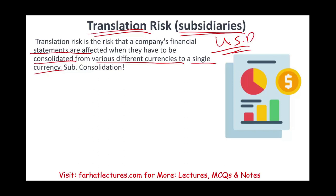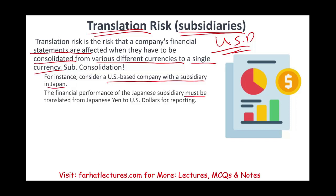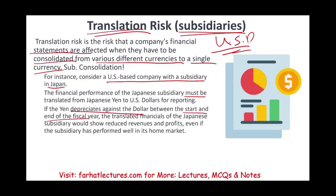For example, consider a US-based company with a subsidiary in China. The financial performance of that subsidiary must be translated from the currency into US dollars at the end of the reporting period — you cannot report sales in yen to users; you have to translate everything to US dollars. If the yen depreciates against the dollar between the start and end of the fiscal year, the translated financial statements will show reduced revenue and profit, even if the subsidiary has actually been performing well with increasing sales and good profit.